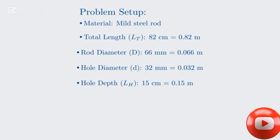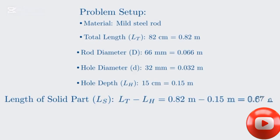A crucial piece of information is the total length of the solid part of the rod. We find this by subtracting the depth of the hole from the total length. So 0.82 meters minus 0.15 meters gives us a solid length of 0.67 meters. The problem memo uses 0.667 meters, both are acceptable for calculations.